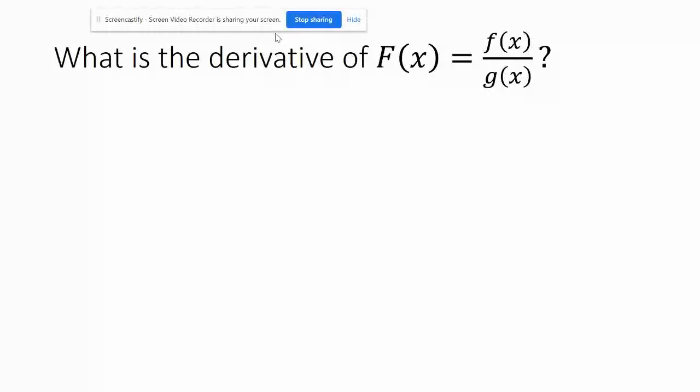Okay, so this one I'm going to prove to you guys. I'm going to start by multiplying both sides of this equation times g of x and canceling it like this. So that means we have big F of x times g of x equals little f of x. So what we're going to do is we're going to take the derivative of both sides of this equation.